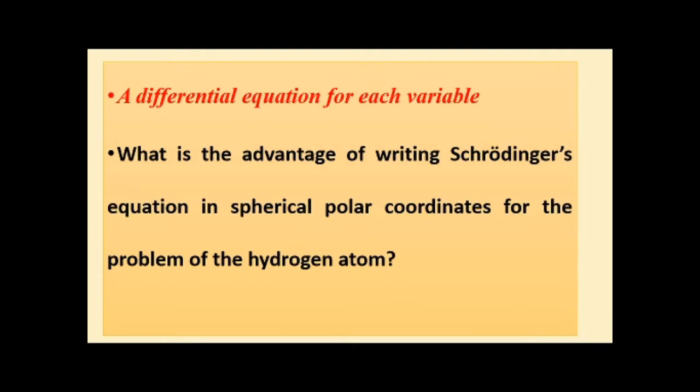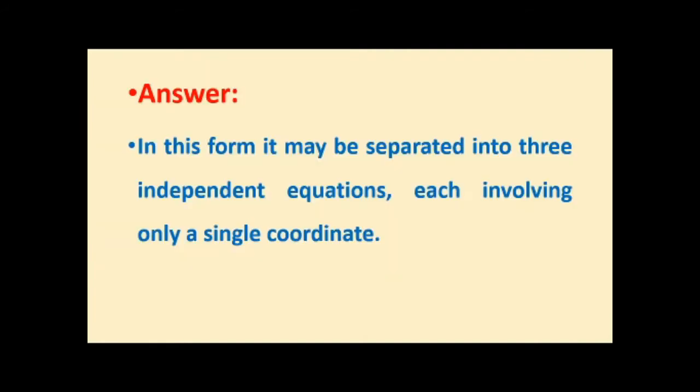The first slide asks: what is the advantage of writing Schrödinger's Equation in Spherical Polar Coordinates for the problem of the Hydrogen Atom? In the last video, we saw the Schrödinger's Equation for the Hydrogen Atom having three variables. In this video, we are going to separate those three variables and write three separate equations which are independent.